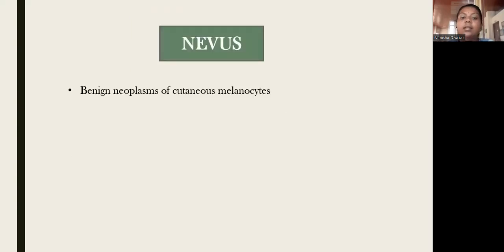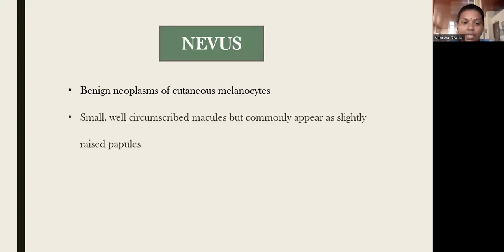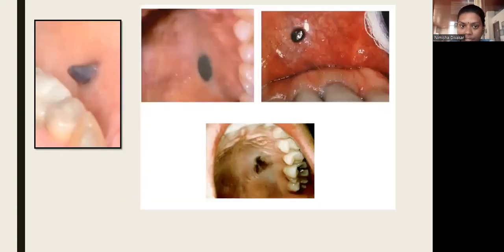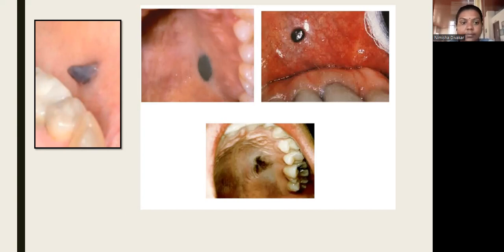Next is nevus. Nevus are benign neoplasms of cutaneous melanocytes. They are small, well-circumscribed macules but commonly appear as slightly raised macules. Sometimes they can be well-circumscribed flat lesions, but sometimes they also appear as slightly raised, smaller lesions than macules. They are brown, blue, gray, or almost black, and occasionally appear as non-pigmented lesions. They are less common in the oral mucosa compared to the skin. We already studied the various types of nevus in oral pathology, and in relation to oral pigmentation, we just need to know that they are benign neoplasms of melanocytes and are mostly asymptomatic.